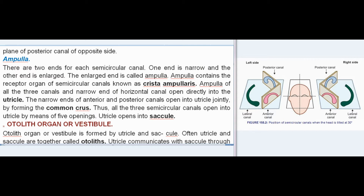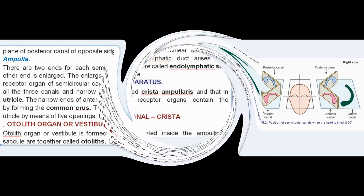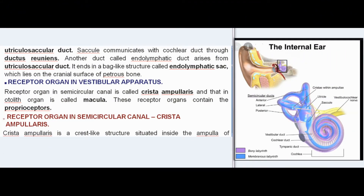The otolith organ, or vestibule, is formed by the utricle and saccule. The utricle and saccule together are often called otoliths. The utricle communicates with the saccule through the utriculosaccular duct. The saccule communicates with the cochlear duct through the ductus reuniens. Another duct, the endolymphatic duct, arises from the utriculosaccular duct and ends in a bag-like structure called the endolymphatic sac, which lies on the cranial surface of the petrous bone.